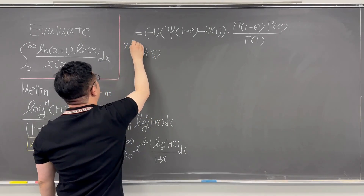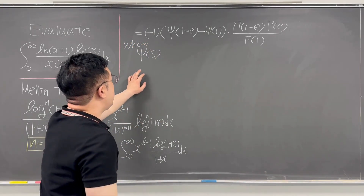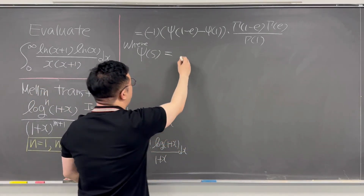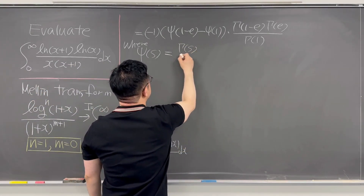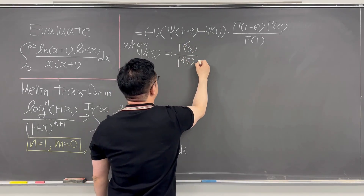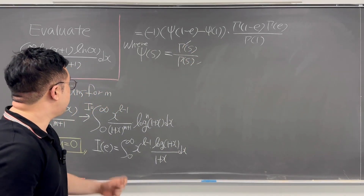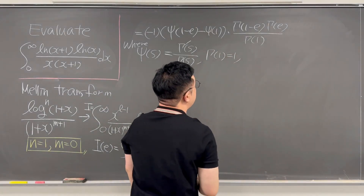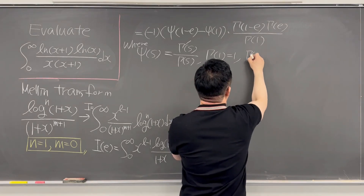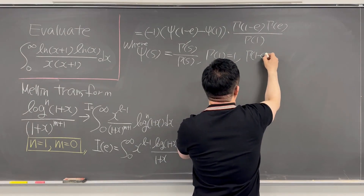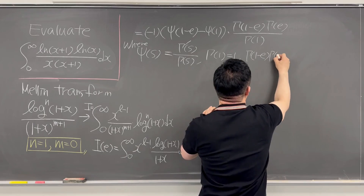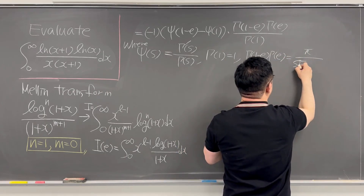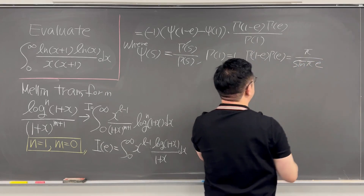Let's talk about psi for a moment. The psi of s is the same as the derivative of gamma(s) over gamma(s). For our case, gamma(1) equals 1, and gamma(1-e) times gamma(e) equals pi over sin(pi·e).